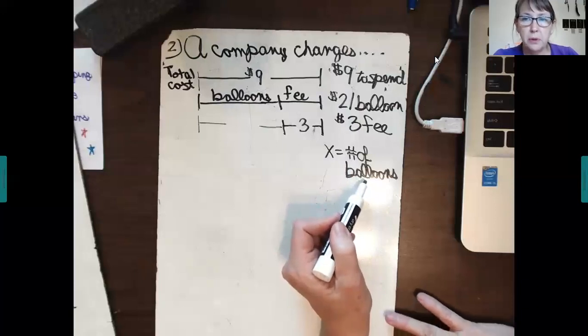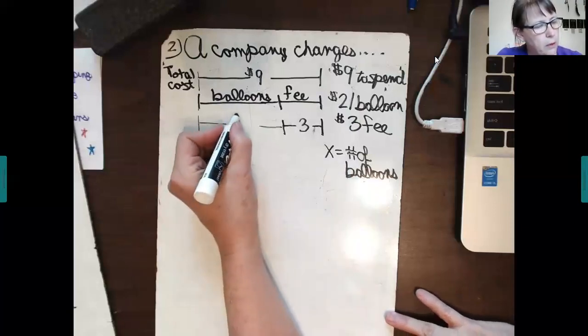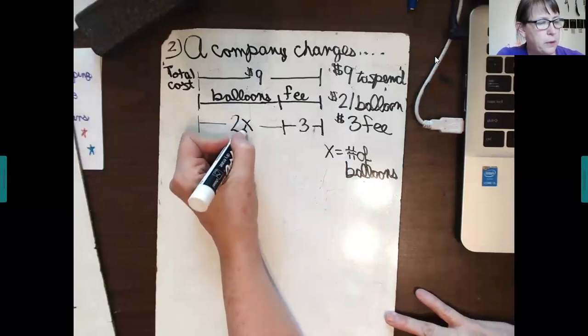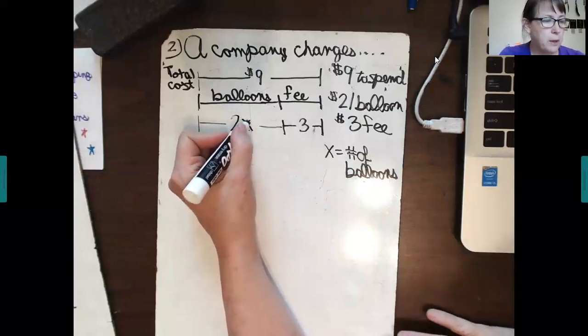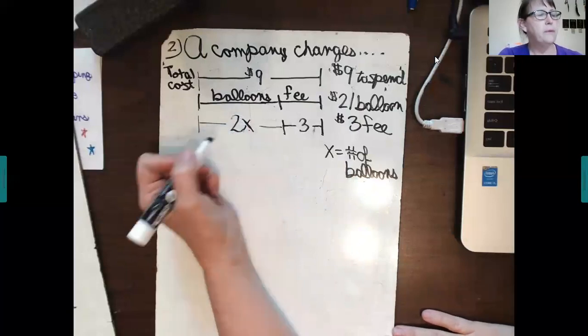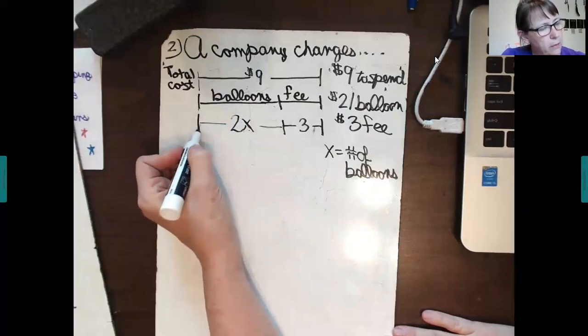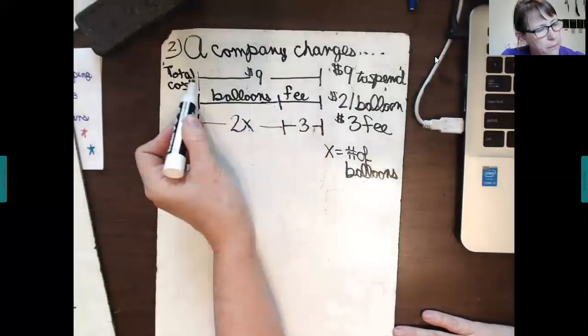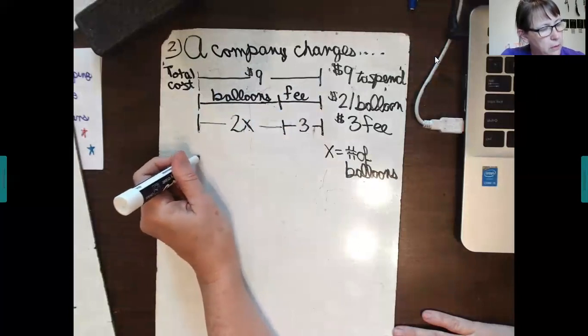I'm going to use the variable X to state how many balloons can they buy, or the number of balloons they will buy. How much does it cost for each balloon? $2. So, I'm going to say $2 times, I don't know how many balloons, 2 times some unknown. That's truly what the variable X is representing. I don't know. It's our unknown. Okay, if you notice with this bar method here, the length of each of these bars is exactly the same.